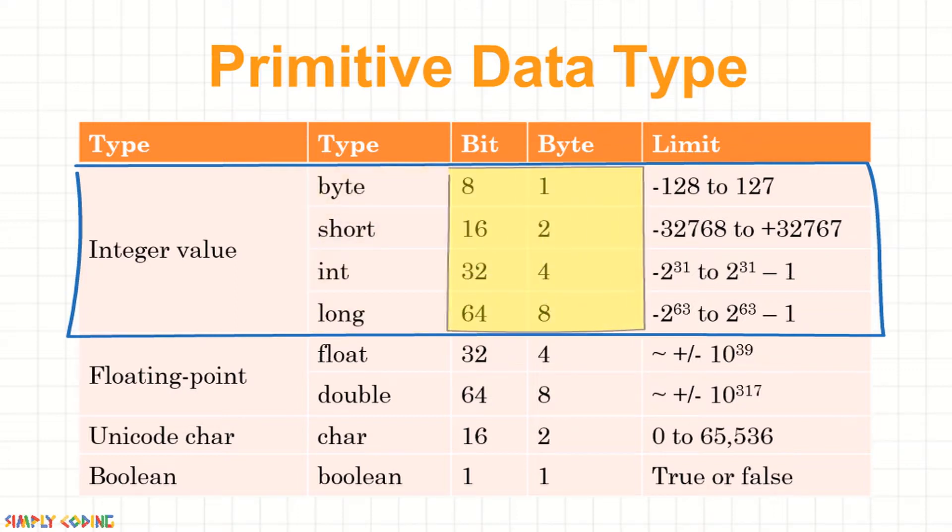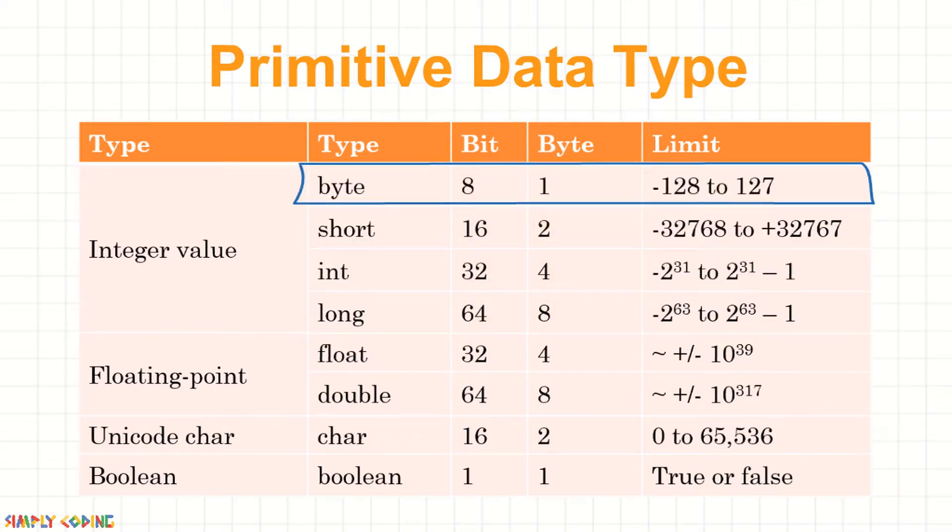Each of these types have storage size and range of values supported. For example, byte has size of 8 bits or 1 byte and can store numbers from minus 128 to 127 only.